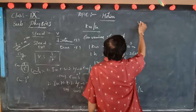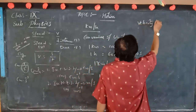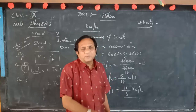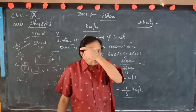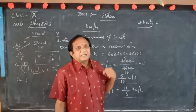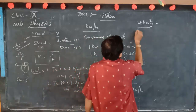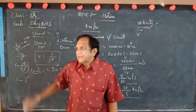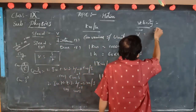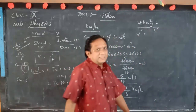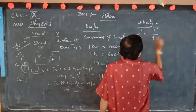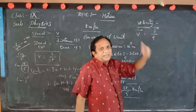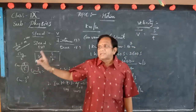The next topic is velocity. Speed and velocity are commonly used words, but in common language people mostly say speed. Velocity means displacement by time, also denoted by V, but it has a direction. In speed there is no direction. Velocity indicates direction, and is equal to displacement divided by time — V equals s by t — but with direction specified.